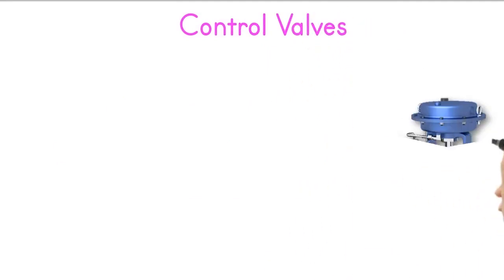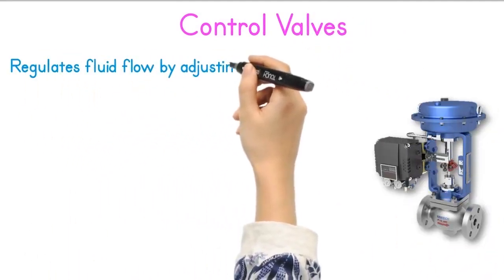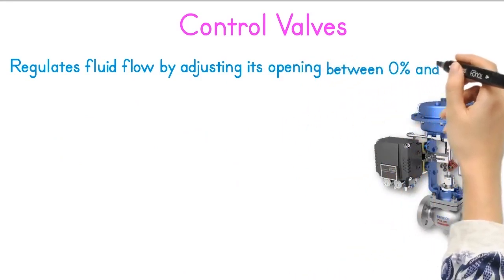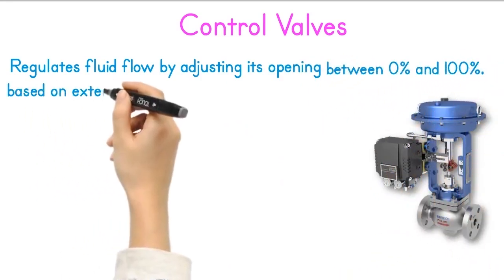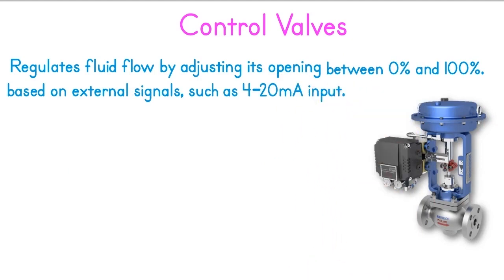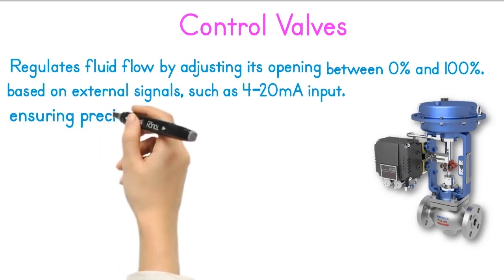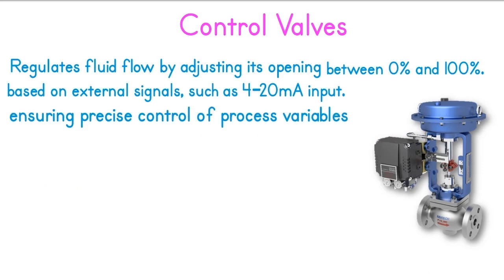Control valves. A control valve regulates fluid flow by adjusting its opening between 0% and 100% based on external signals, such as a 4 to 20 milliamp input. This allows it to adapt dynamically to changing conditions, ensuring precise control of process variables like flow, pressure, temperature, and level.